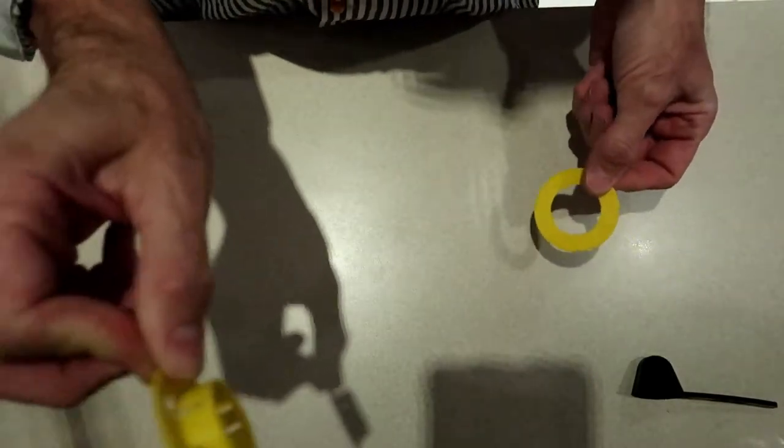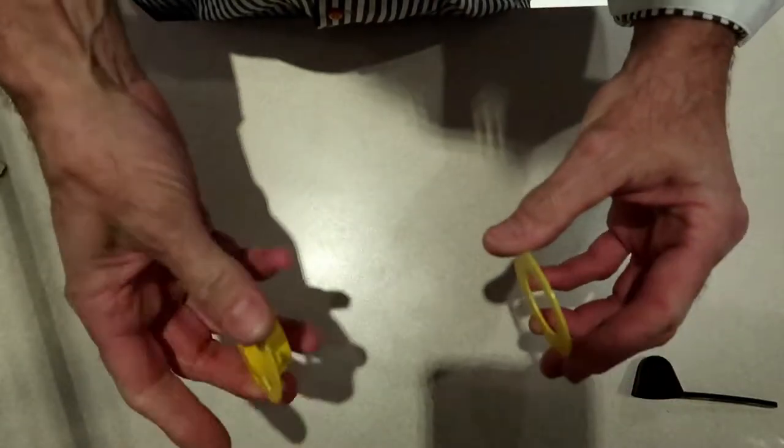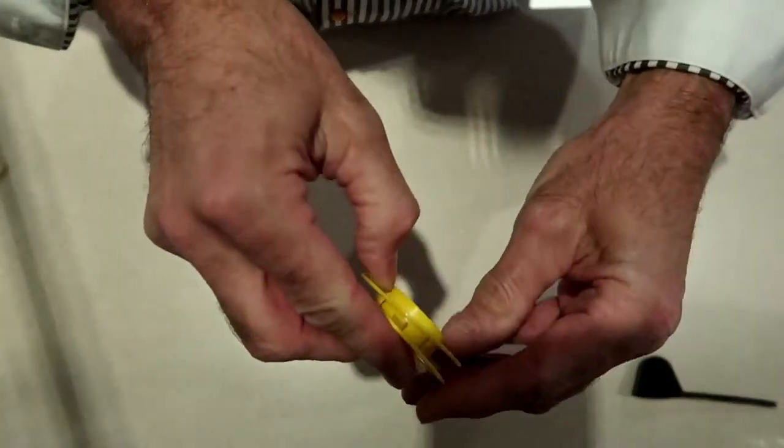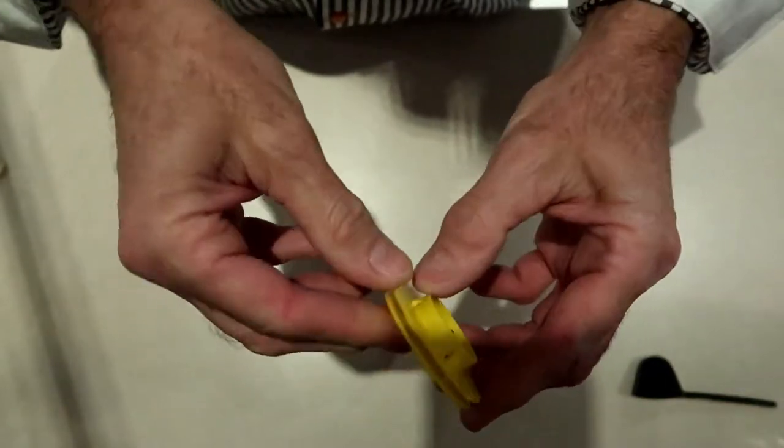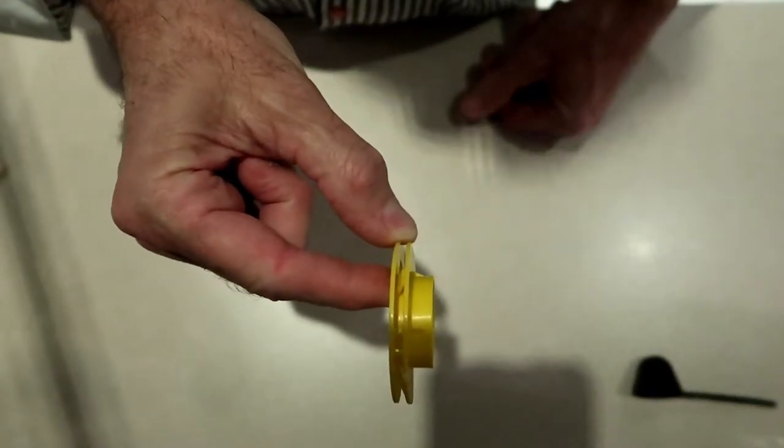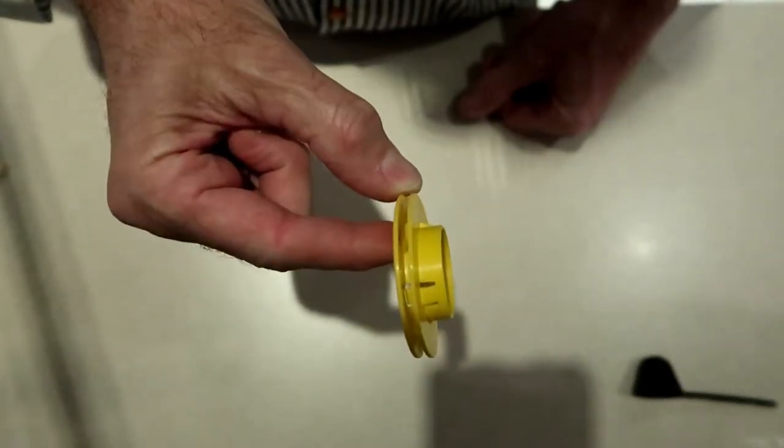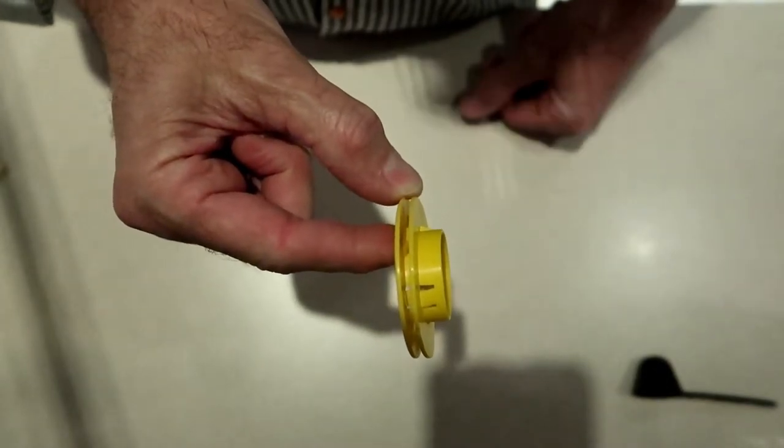What has to happen, this goes on one side of the stud, this goes on the other and you push these two together until they snap and then you have a hole to pass wires through. The problem is I can't do that. I don't have access to both sides of the stud. So I'll show you what we're going to do.